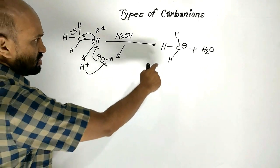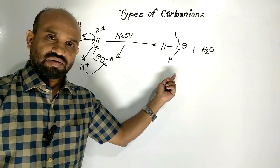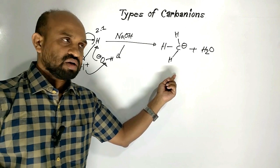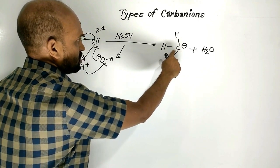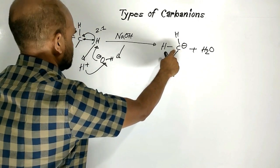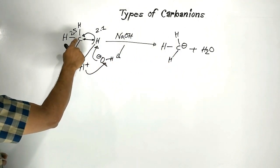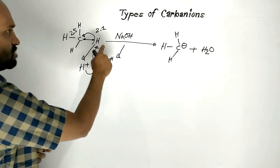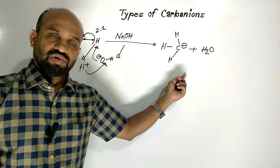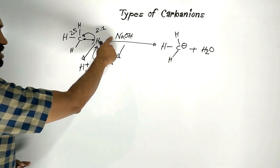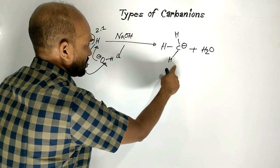Here, this is a carbanion. What is a carbanion? An ion with a negatively charged carbon is called a carbanion. After heterolytic fission of the carbon-hydrogen bond, this carbanion is formed in the presence of alkali. This is the methyl carbanion.